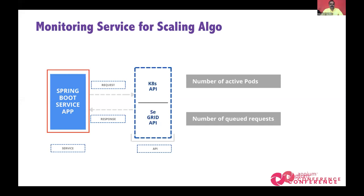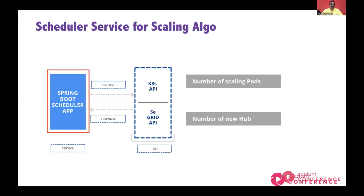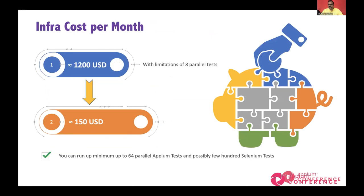The monitoring service reports available nodes, running pods, and queued requests. The scheduler service — the second component — uses that information to scale up or scale down by sending requests to the Kubernetes API. Unless we know how many are queued, we don't know how many to scale up. You can control scaling from your test runner (e.g., TestNG parallel threads), at the Grid level, or at the Kubernetes level. For the demo, we have a maximum of 20 nodes configured.